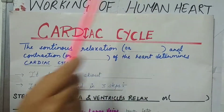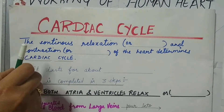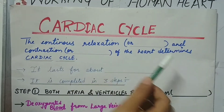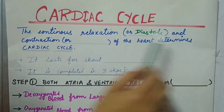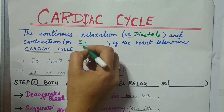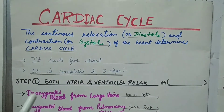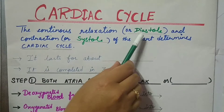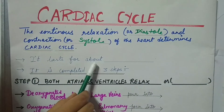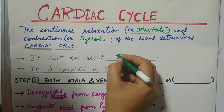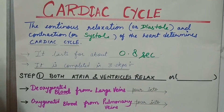The working of the human heart is best described as the cardiac cycle. It is defined as the continuous relaxation — also called diastole — and contraction — called systole — of the heart. The cardiac cycle is completed when both diastole and systole take place. It lasts for about 0.8 seconds and is completed in three steps.